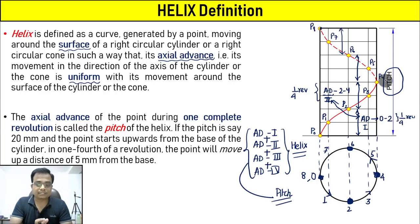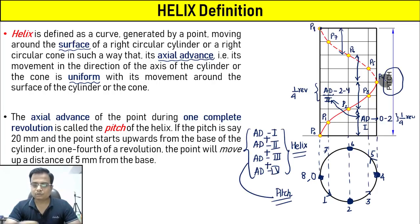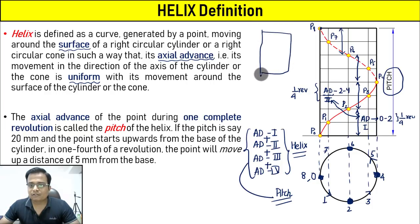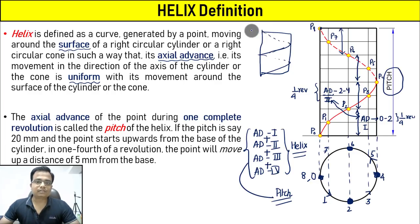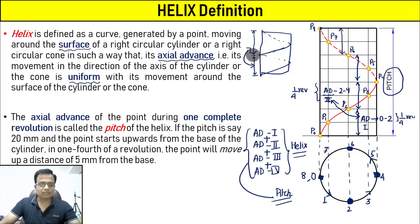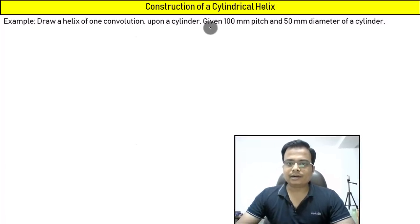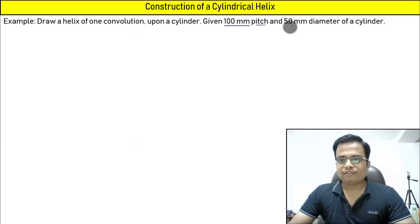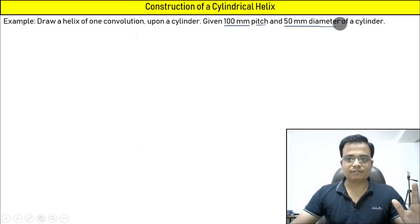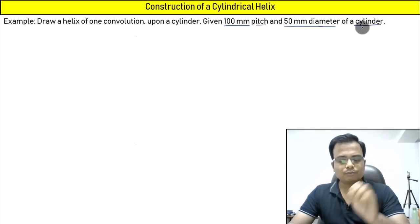You will be learning all of these things in the upcoming lectures. But for now, let us understand with the help of a nice example how a helix can be constructed — for one convolution only. If there are two convolutions, there will be two pitches. Let's kick off with a problem: draw a helix of one convolution upon a cylinder, given 100 mm pitch and 50 mm diameter. It's a cylindrical helix on a cylinder. You need to make the front and top view of a cylinder.